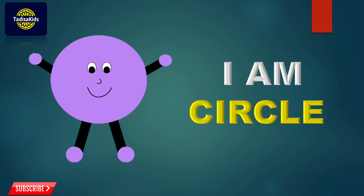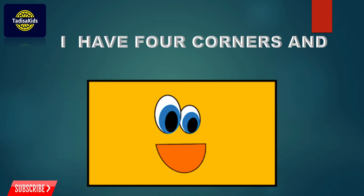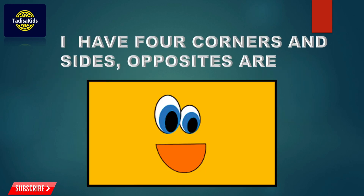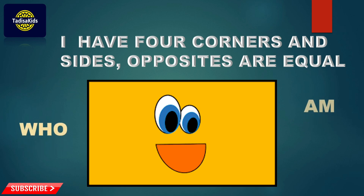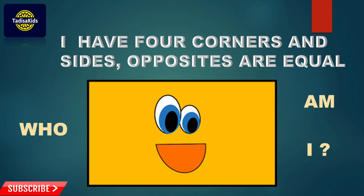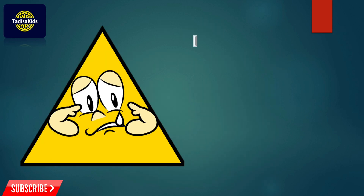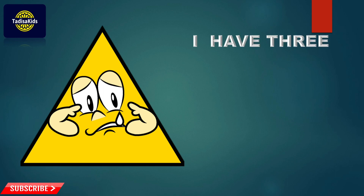Next one. I have four corners and sides, and my opposites are equal — who am I? Can you guess, kids? Which shape is this? Let's check. I am rectangle! Yes, you are right!